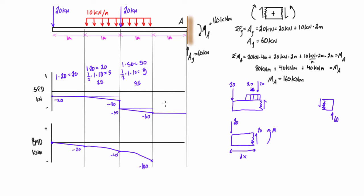The last section is just a rectangle, so the area is base times height: 1 meter times 60 kilonewtons equals 60 kilonewton-meters. That drops us linearly from minus 100 down another 60 units to minus 160 kilonewton-meters.